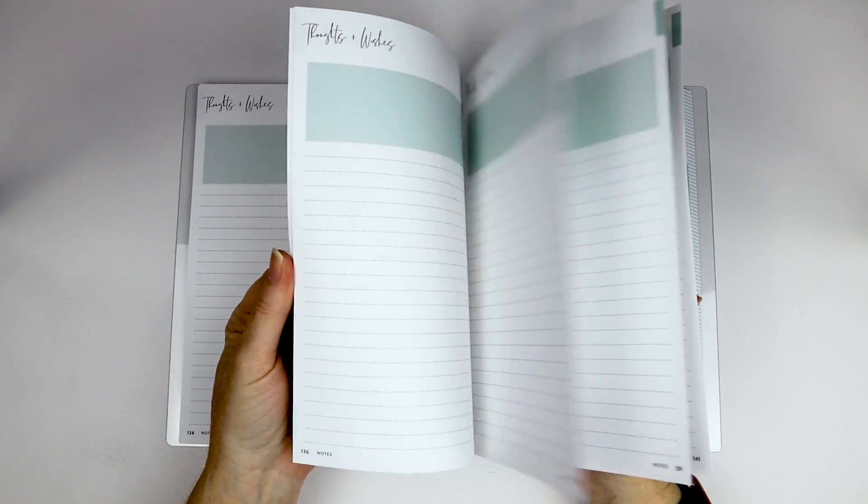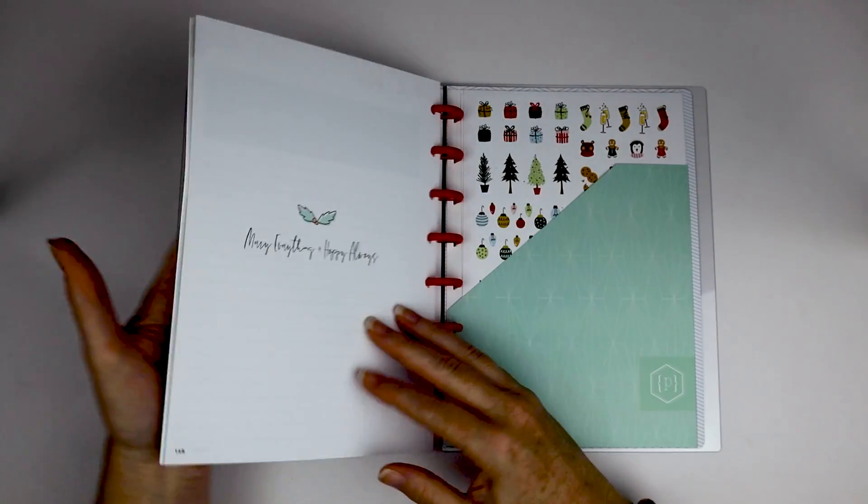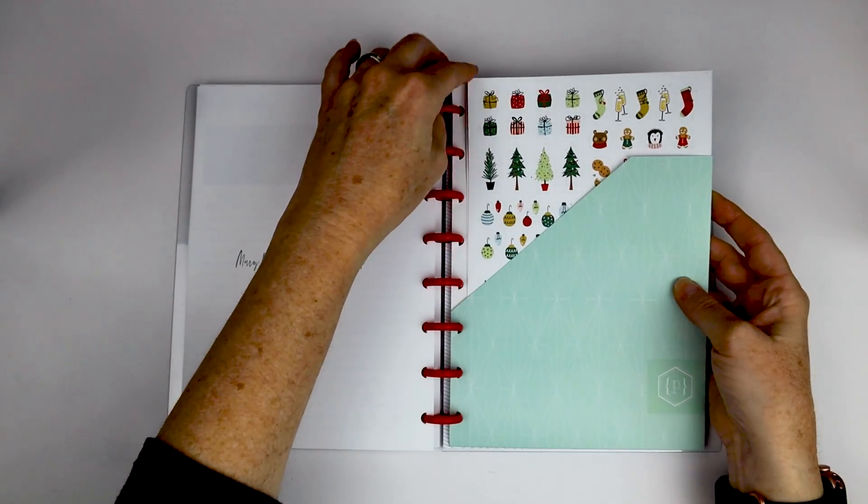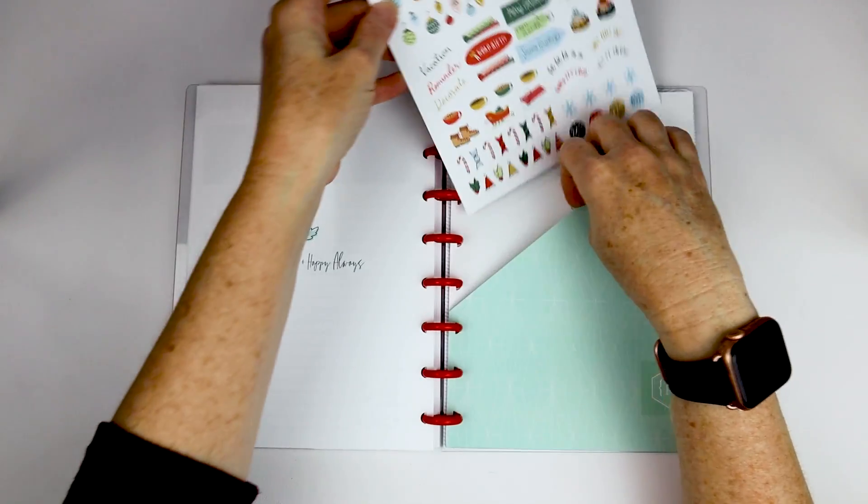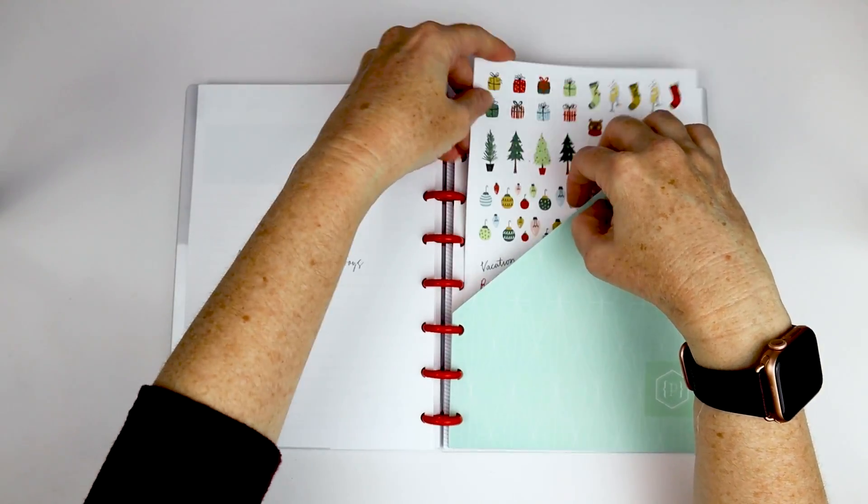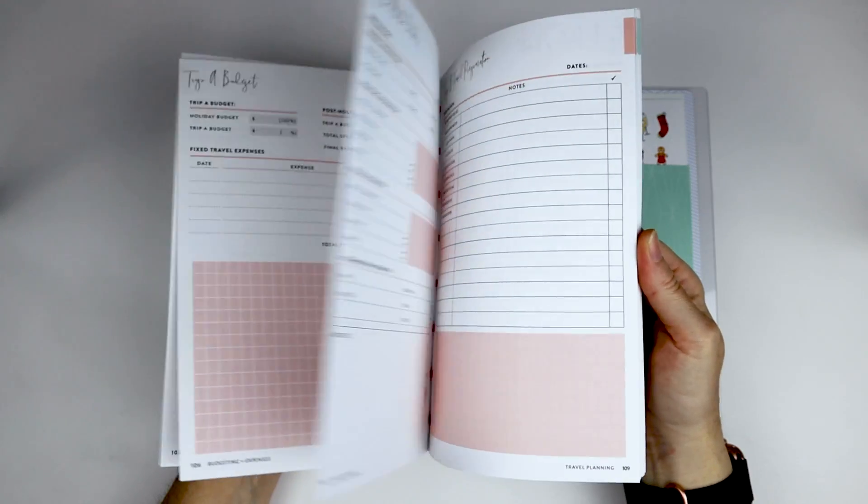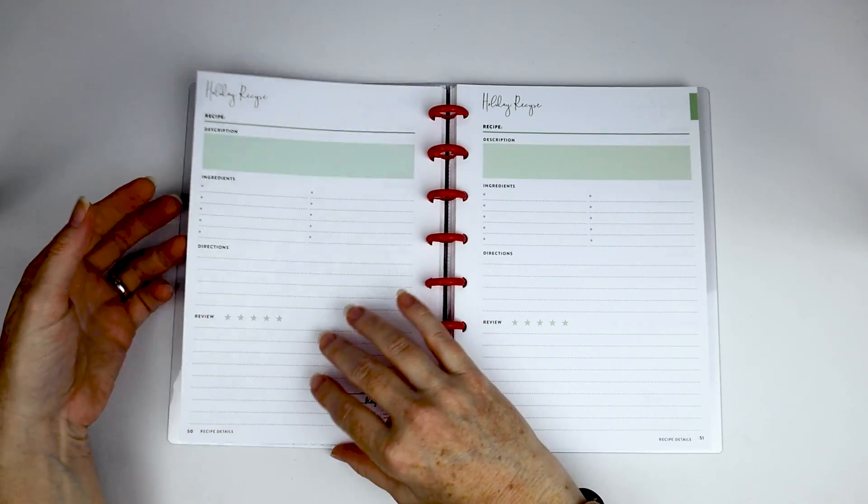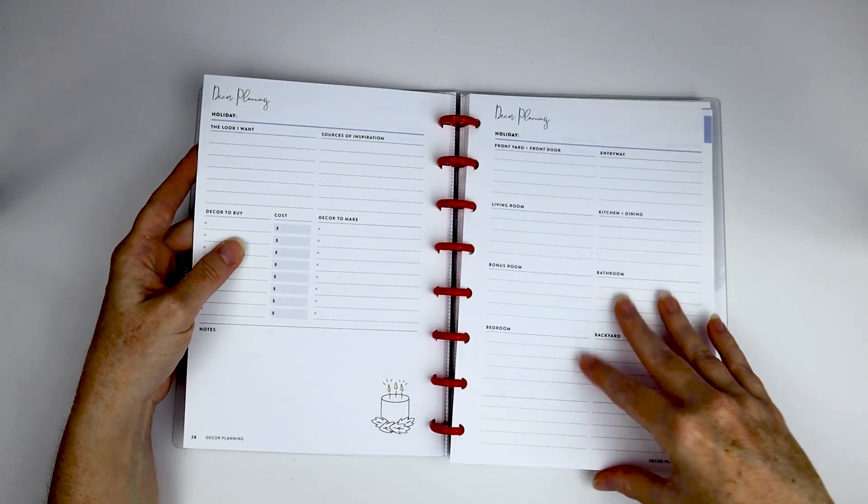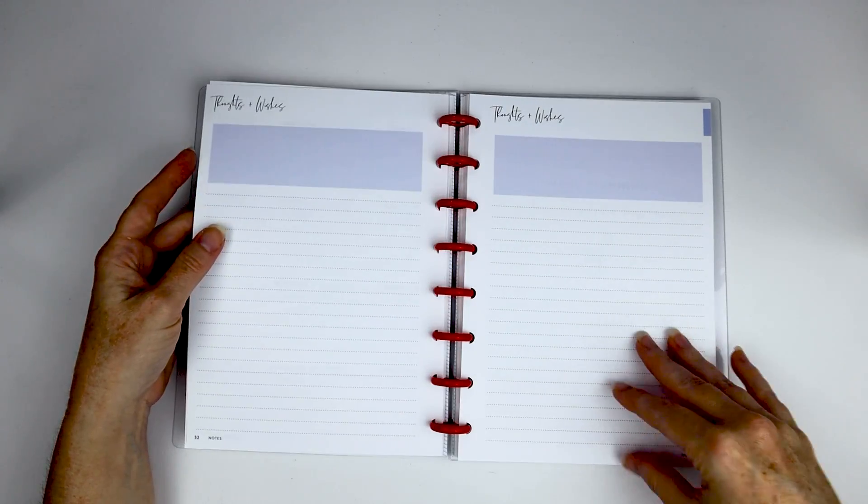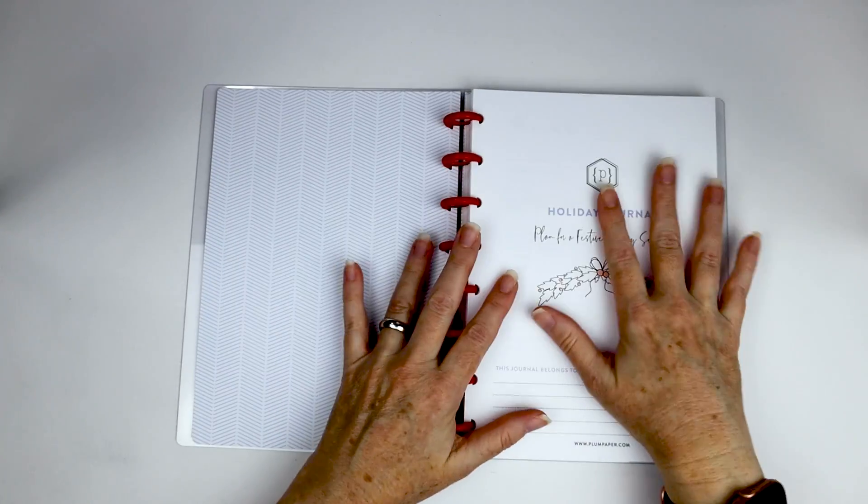And then there's a bunch of pages just for journaling. So if you wanted to memory keep about things that are going on or maybe you wanted to make notes about things that you would want to do differently, you could do that. Again, it comes with a little folder. And then I bought the Christmas stickers that kind of go along with it as well. They were kind of cute. So I can make it a little more Christmassy if I want, but my impression kind of as you flip through it is it's kind of, it's not super Christmassy.